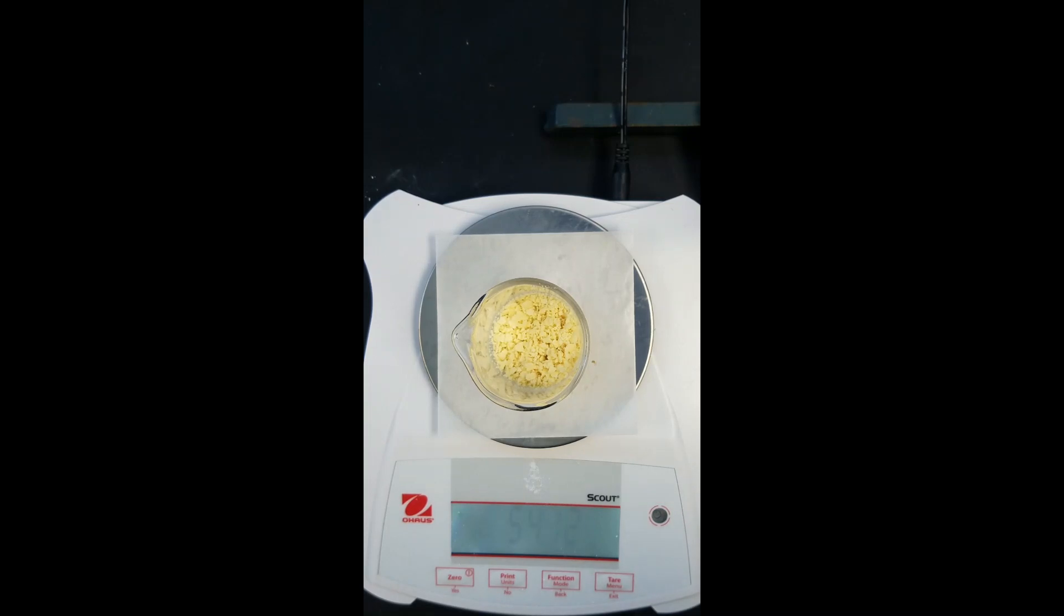We're going to follow the exact same procedure that we did with the first set where we add the 10 milliliters of petroleum ether, mix it for a minute, filter it and let the vacuum run for a minute. And we're going to do that three times in order to extract the fat from our Pringles.